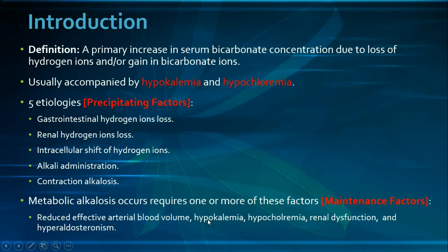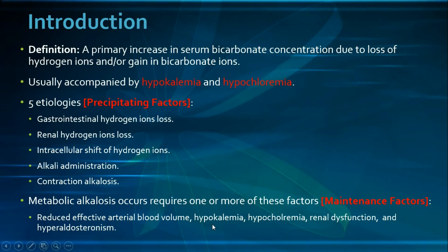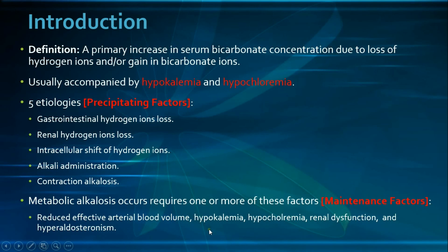In hypokalemia, there are two primary mechanisms by which it maintains alkalosis. First, hypokalemia activates the hydrogen-potassium ATPase pump, causing more potassium to shift out of cells in exchange for hydrogen ions going inside, maintaining alkalosis. Second, hypokalemia stimulates the hydrogen-potassium ATPase pump in the luminal membrane of type A intercalated cells in the kidneys, reabsorbing potassium and secreting hydrogen ions into the tubules, thereby maintaining the alkalosis.